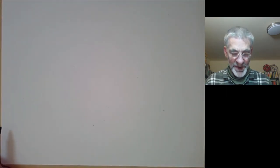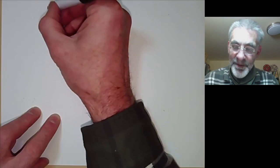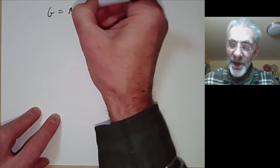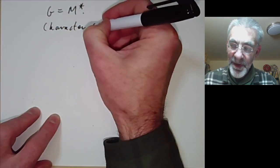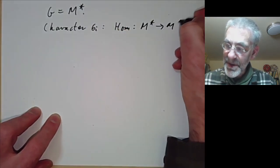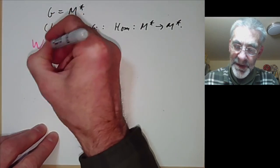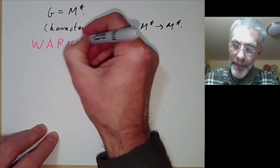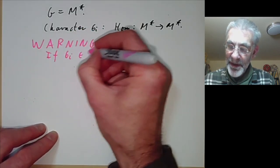Now let's go back and use this to show that we can find theta such that beta is non-zero. We're going to take G to be the multiplicative group of M, so a character sigma_i is just a homomorphism from M* to M*.